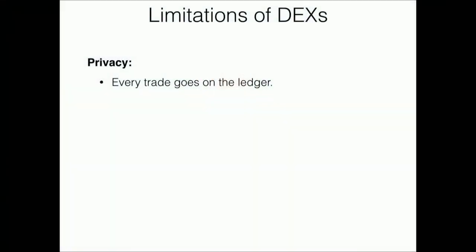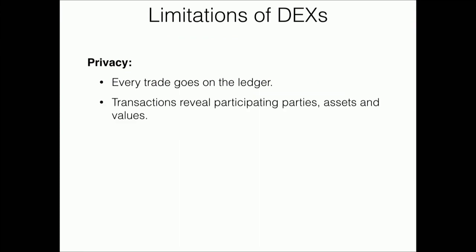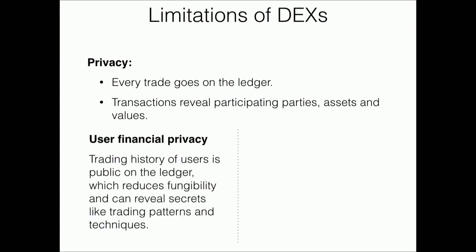In a decentralized exchange, every trade goes on the ledger, and the transaction reveals the identities of the participating parties, what assets were involved, and what the values were. This is problematic because it harms user financial privacy — the trading history of users is publicly visible on the ledger, reducing fungibility and potentially revealing trading secrets or techniques the user might want to keep private.